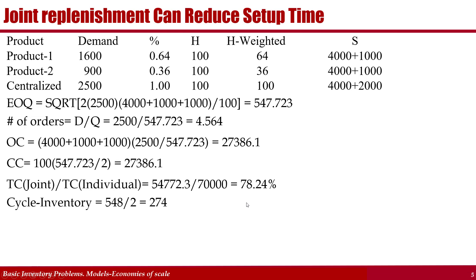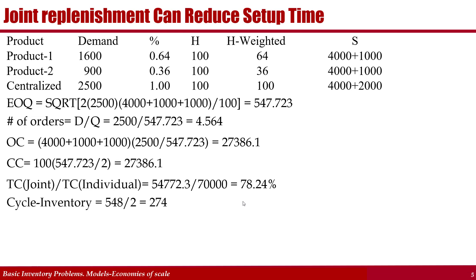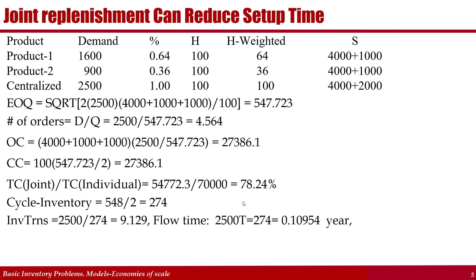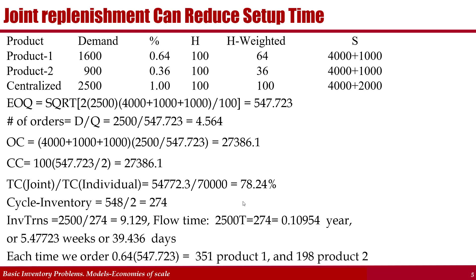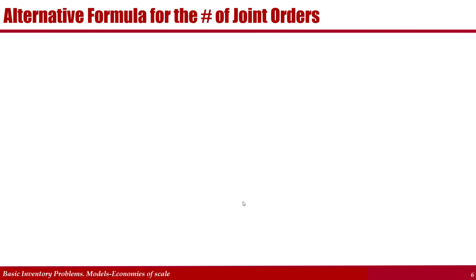Dividing by the original total cost, that is about 78%. So by ordering together, we reduce our total cost to about 78% of the separate ordering cost. Cycle inventory is what we order divided by 2. Inventory turns is demand divided by average or cycle inventory. We reduce our average inventory, increase inventory turns, and improve our total cost by ordering together.